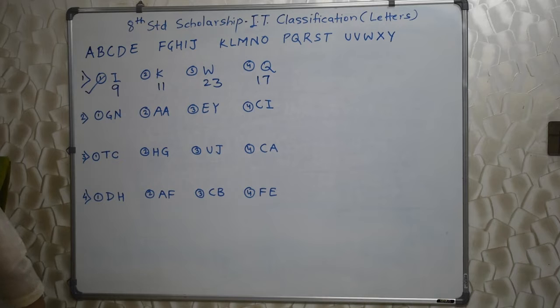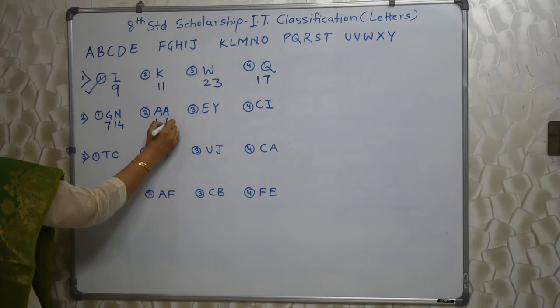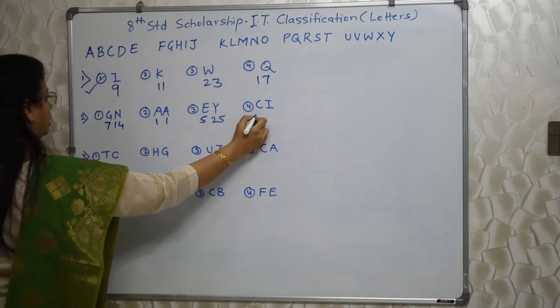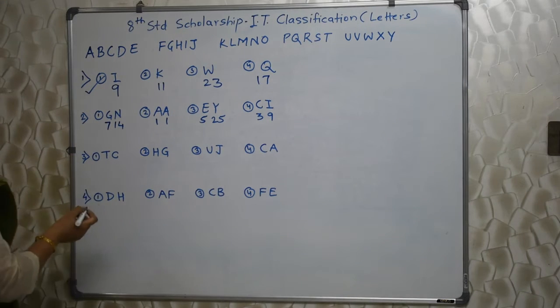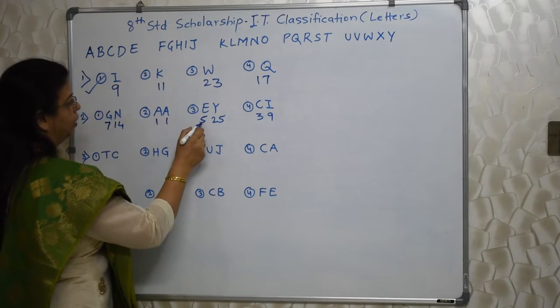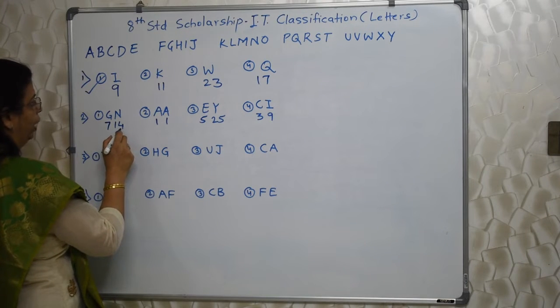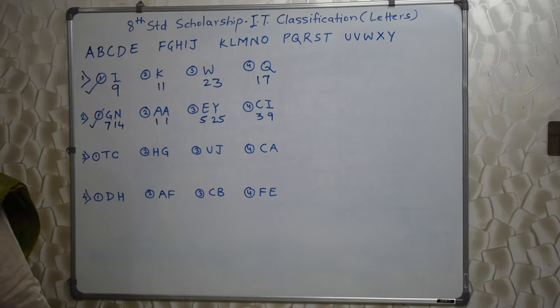Let's go ahead. Same way for the next one also we need to assign numerical values. G is 7, N is 14, A is 1, E is 5, Y is 25, C is 3, I is 9. So, students who know the square numbers, immediately they will know 1 square 1, 5 square 25, 3 square 9. But 7 square is not 14. So, this is a class of squares. This one is odd because it is not following that class.